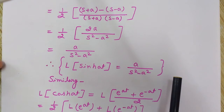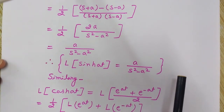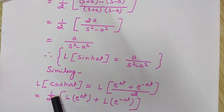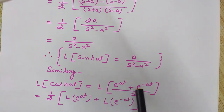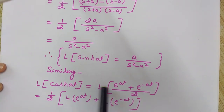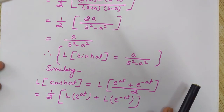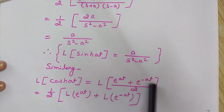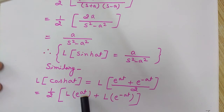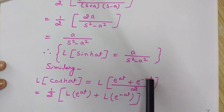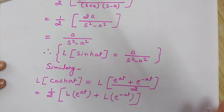In the same way, we can find the Laplace transform of cosh(at). We know that cosh(at) equals e^(at) plus e^(-at) divided by 2 — in sinh(at) it was a minus sign, but everything else is the same. Taking the Laplace transform of both sides and applying the linearity theorem, we distribute the operator over the sum.